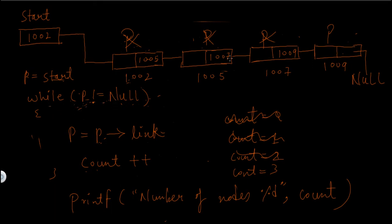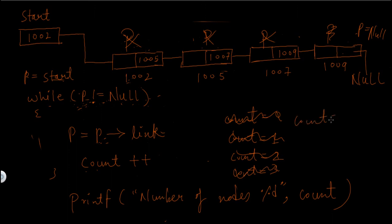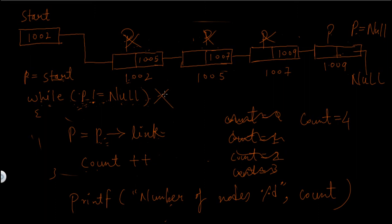Now again this while condition will be checked. p is not equal to null, so this while loop is still true and this statement will be executed. Now p->link means the link part of this node, and the link part of this node is equal to null, so null will be assigned to p — p is now equal to null. This statement will again increment the value of count by 1, so count will become equal to 4. Now again the while condition will be checked, and this time p is equal to null, so the while condition becomes false, the while loop terminates, and control moves to the printf statement which prints number of nodes: 4, because the value of count is 4.